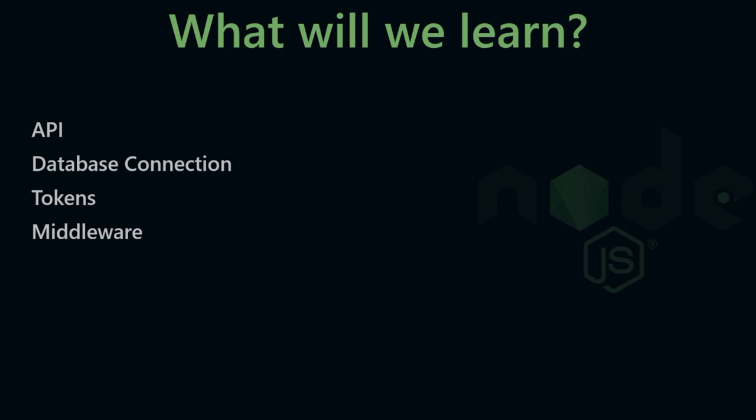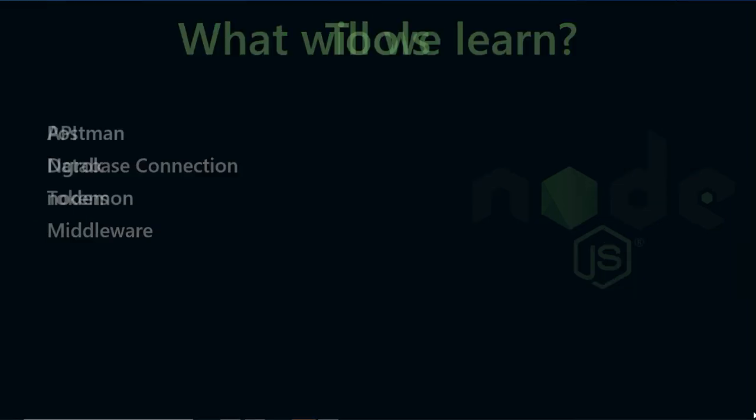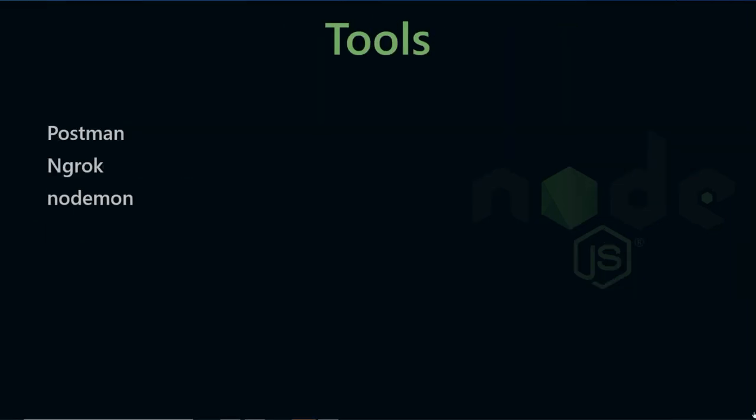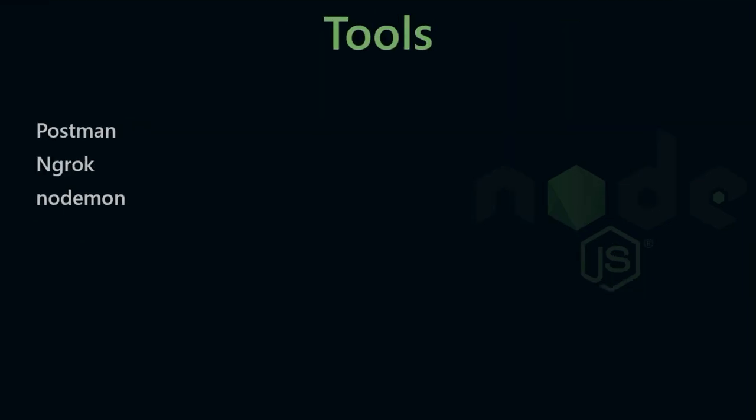There are other languages that have middleware too. If you use middleware, it can help us. Now we will talk about tools and tokens. We will use the Postman tool and talk about API functionalities — get request, post request, put, and delete.